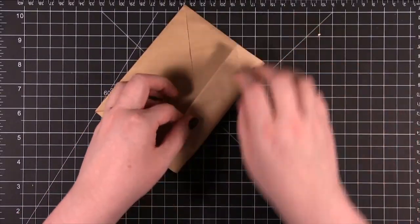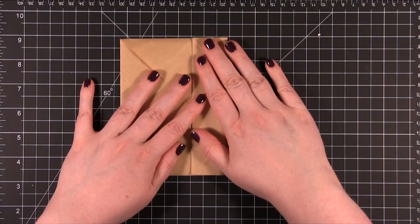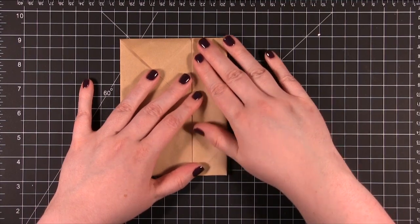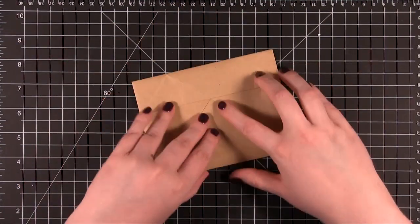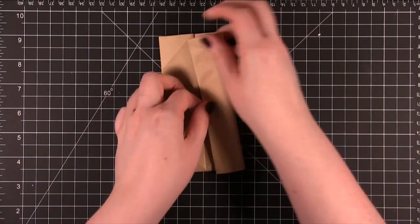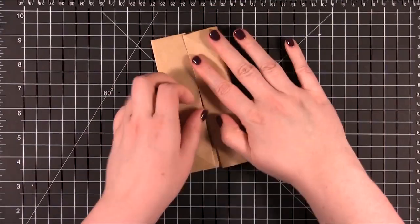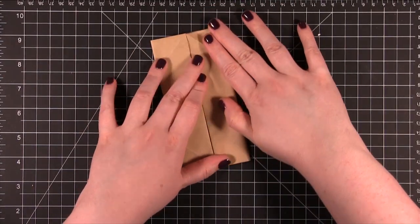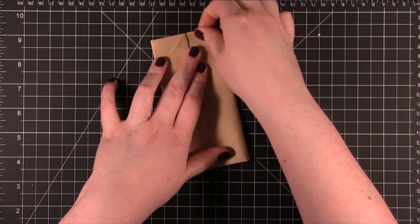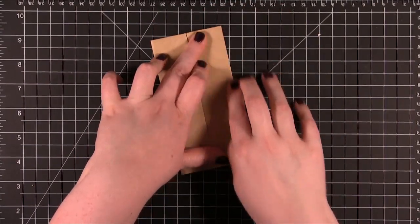But I'm going to take the straight edge and fold it into the center. Do that on all four sides actually. This is why you need kind of a lighter weight paper. You don't want cardstock because you're folding these over quite a bit.